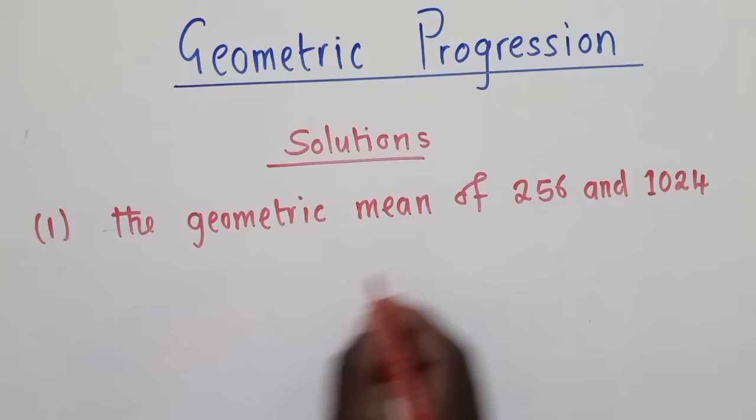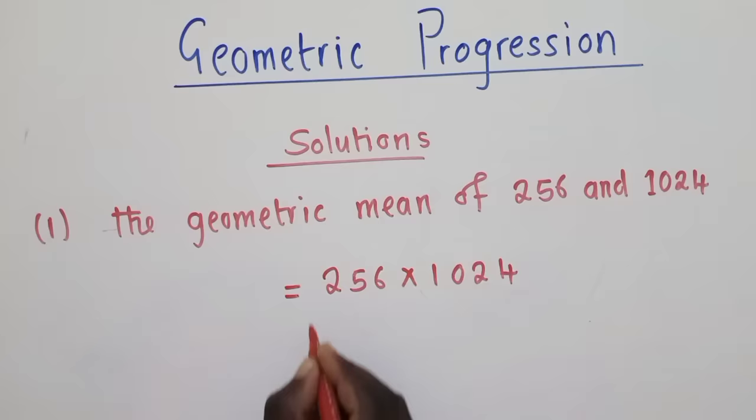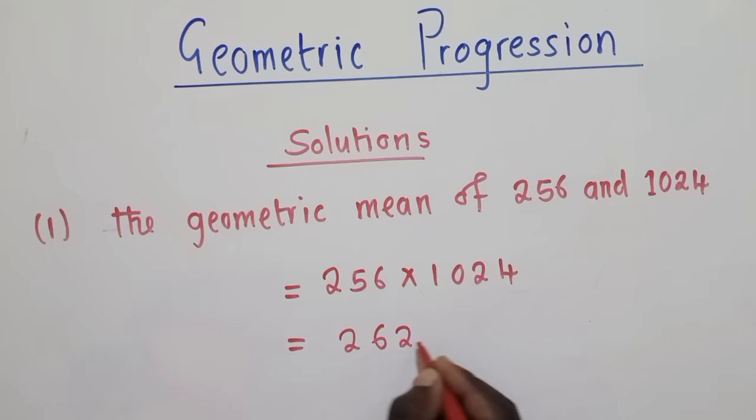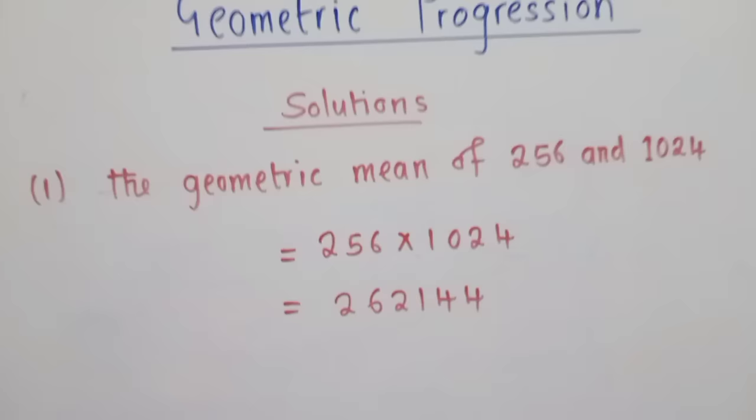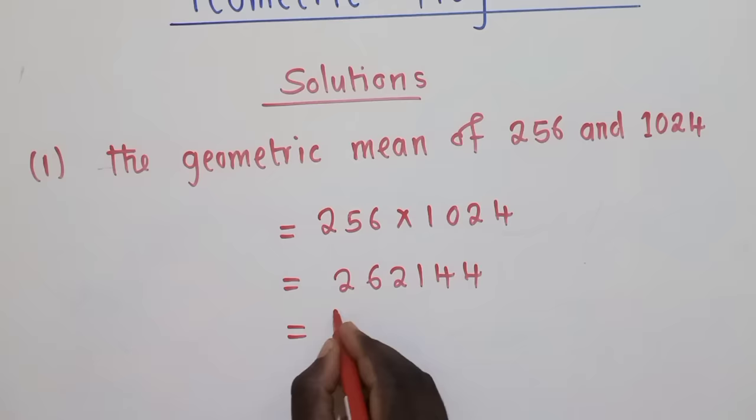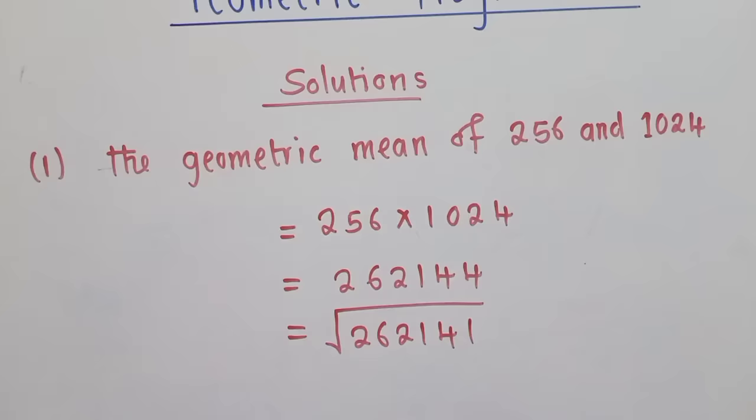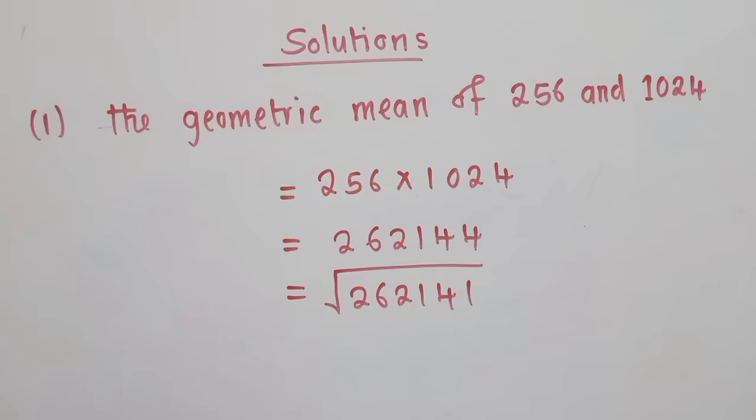When we multiply 256 times 1024, we get 262,144. Once we do that, we now find the square root. When we punch on our calculator, we get 512. So the geometric mean of this and this will be 512. Let's go to question 2, where we need to find the 11th term.